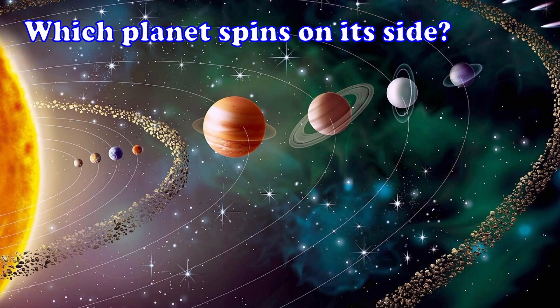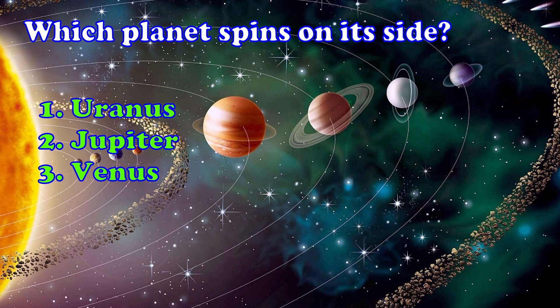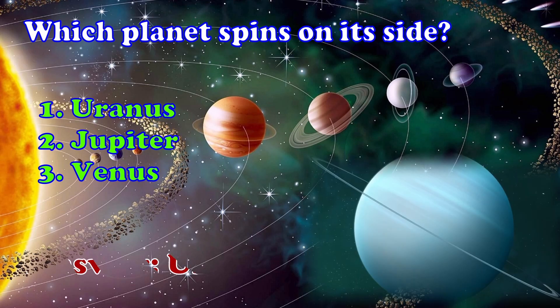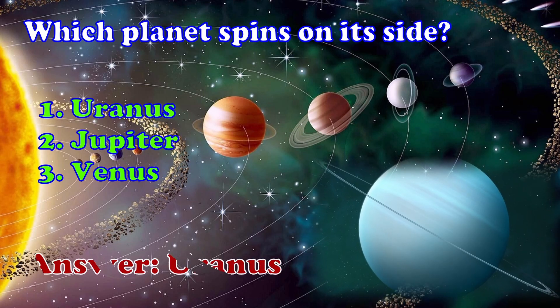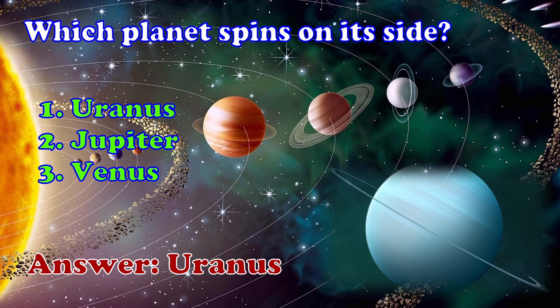Which planet spins on its side? 1. Uranus, 2. Jupiter, 3. Venus. The answer is Uranus.